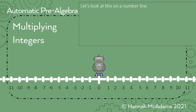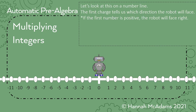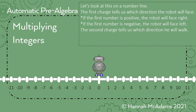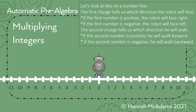Let's look at this on a number line. Whether the first number is negative or positive tells us which direction the robot will face. If the first number is positive, the robot is going to face to the right toward the positive numbers. If the first number is negative, the robot is going to face to the left toward the negative numbers. The second number tells us which direction he will walk: if the second number is positive, he's going to walk forward, and if the second number is negative, he will walk backward.